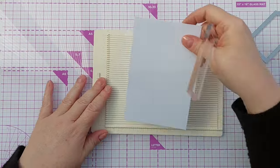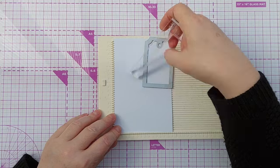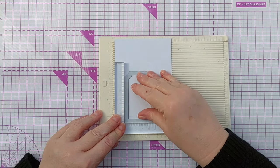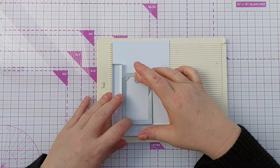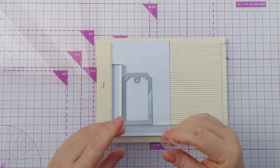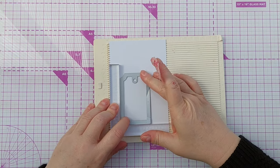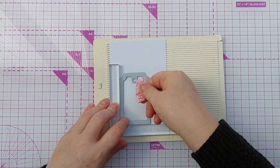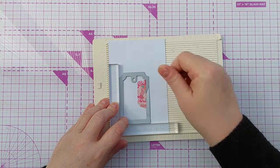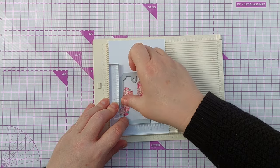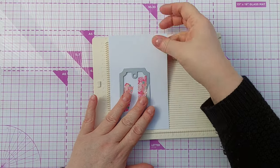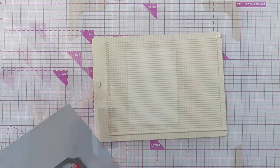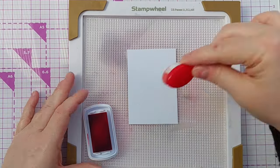First things first, I wanted to make an aperture in the front panel of my card. So I took my scoreboard, tucked my smooth white cardstock panel into the corner, added a corner positioner, and then pushed the die against it. That way I know that my aperture is going to be equidistant from the two sides, which is where I wanted it.